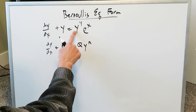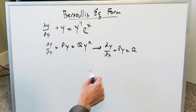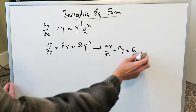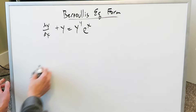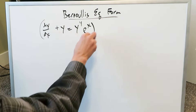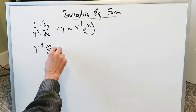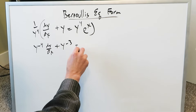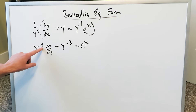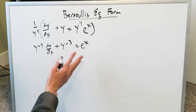You need to convert this into your linear form where py equals q, so the y to the n must disappear. Divide everything by y to the 4. When you do that, you get y to the minus 4 dy over dx plus y to the minus 3 equals e to the x. It's better to keep the negative exponents in the numerator form to facilitate the z-substitutions that follow.